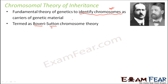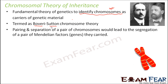As per this theory, chromosomes contain genes. So when chromosomes separate during the course of any cell division, the genes also separate. When the genes separate, that is how they get transmitted to their offspring, because the cell divides to form the offspring. So when the cell divides, the chromosome divides, and since the chromosome contains genes, the genes also divide. Pairing and separation of a pair of chromosomes would lead to the segregation of a pair of Mendelian factors they carried.